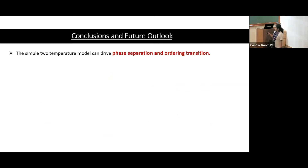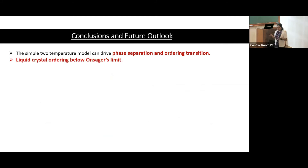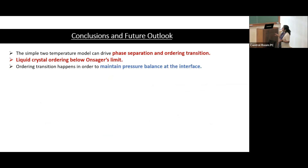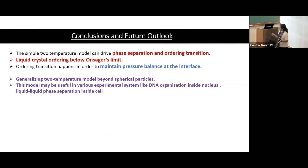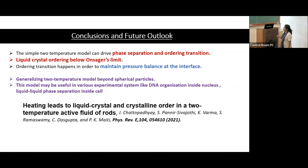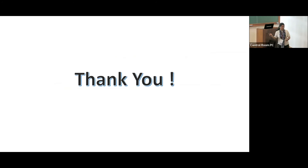In summary, the two-temperature model gives rise to phase separation and ordering transitions in soft repulsive spherocylinders. It also produces phases not available in equilibrium, governed by pressure balance at the interface. We believe this model can generalize the two-temperature approach beyond the spherical limit and apply to many experimental systems. In one line: heating can lead to liquid crystal and crystalline order in active fluids.